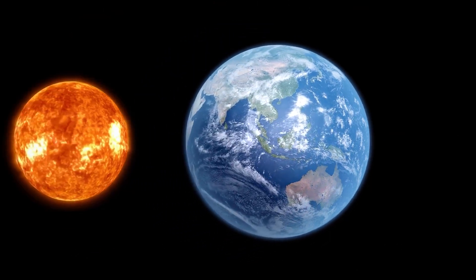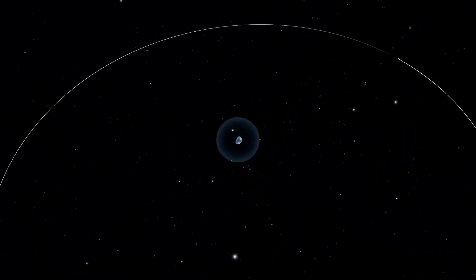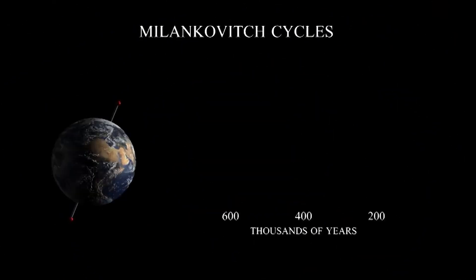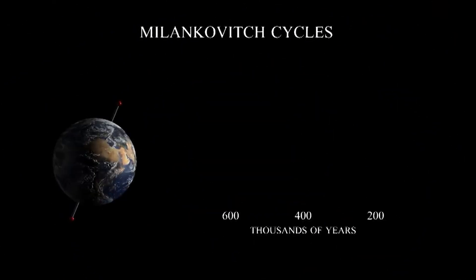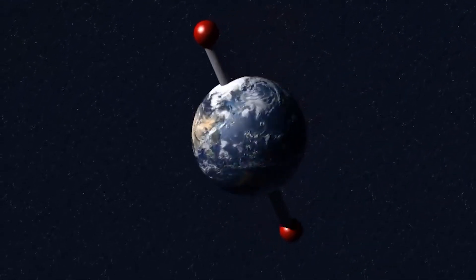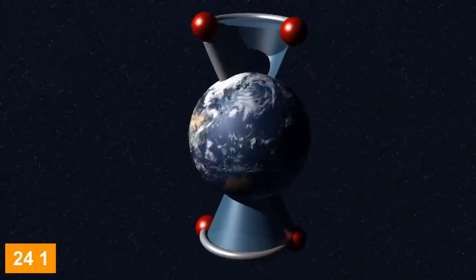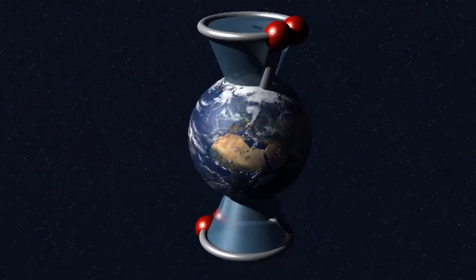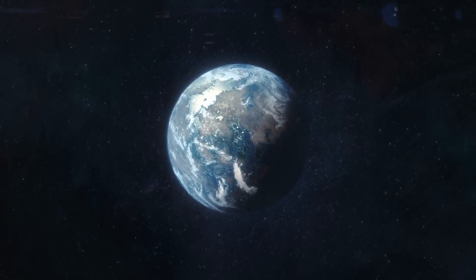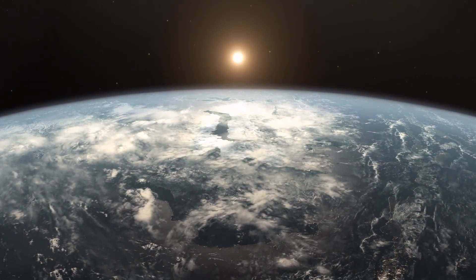Over time, Earth's orbit undergoes subtle shifts, gradually accumulating and driving long-term variations in our planet's climate and general environment. These alterations are recognized as Milankovitch cycles. One prominent feature of these cycles is the Earth's axial tilt, oscillating between approximately 22 and 24.5 degrees over a cycle lasting roughly 41,000 years. This fluctuation directly impacts the quantity of solar radiation reaching different portions of Earth, affecting the onset and severity of glacial periods or ice ages.